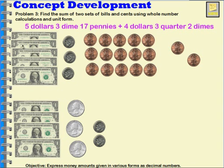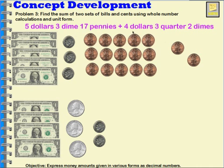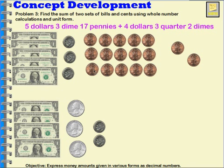Now let's think about adding two amounts together. We have five dollars, three dimes, and seventeen pennies at the top. If I take ten of those pennies and put them together, I have ten cents, which is the same as one dime. Counting up the dimes and remaining pennies, that gives me five dollars and forty-seven cents for the first amount.